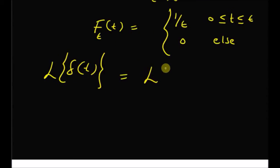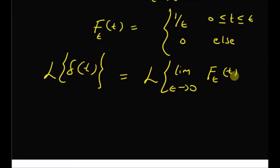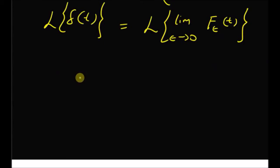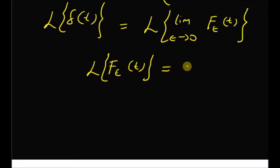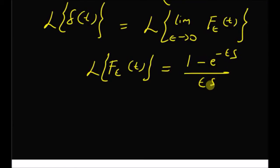Given this definition, we want to derive the Laplace transform of the impulse function. This is equal to, by using this definition, the Laplace transform of the limit as epsilon tends to 0 of f_epsilon of t. From a previous video, we learned that the Laplace transform of f_epsilon of t is given by (1 minus e to the power minus epsilon s) divided by (epsilon times s).